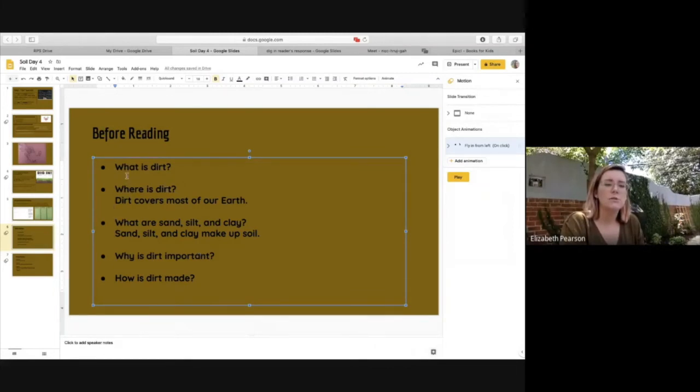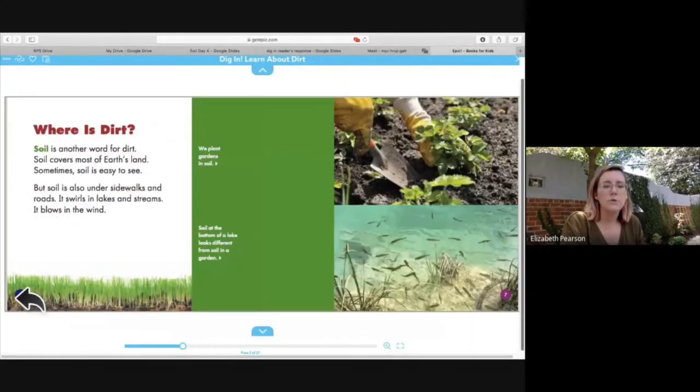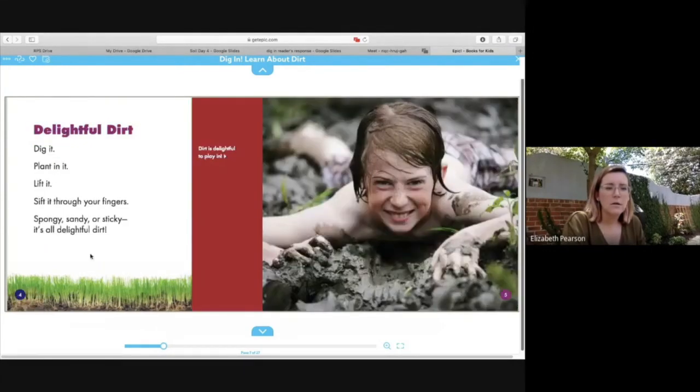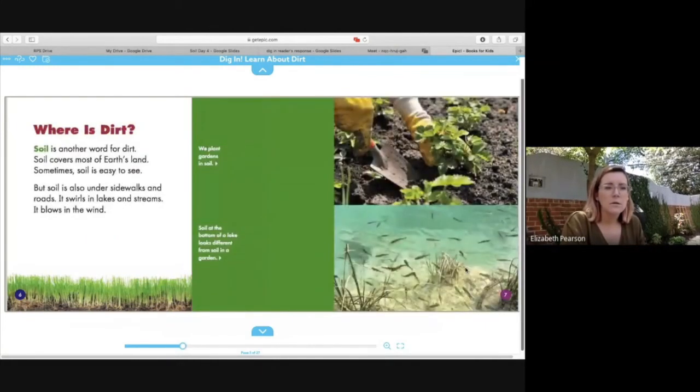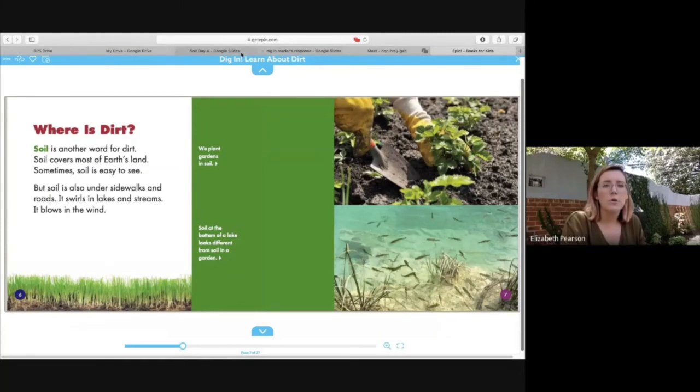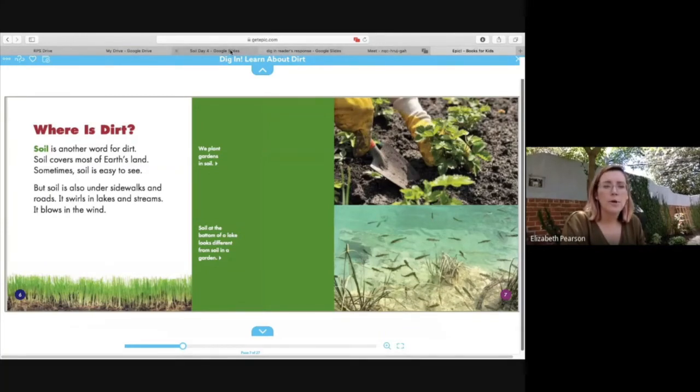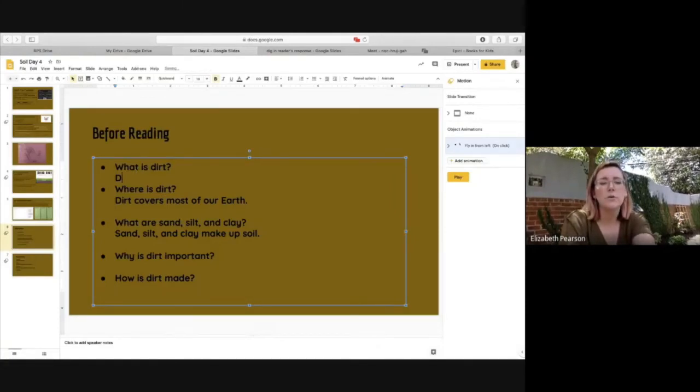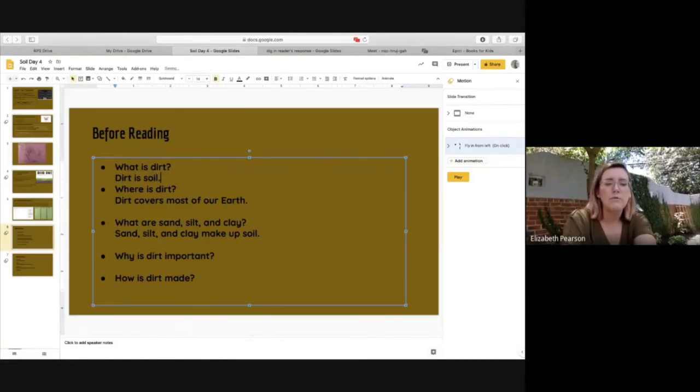What is dirt? What is dirt? Do we need to go back and look? We can always do that. That's what good readers do. Good readers always go back. So soil is dirt. So dirt is soil. That could be a good answer to our question. And we could always go back and add more to it later. Dirt is soil. If we get more information later on in the book, we can always go back to these questions and add more detail. But that's a good place to start for now.